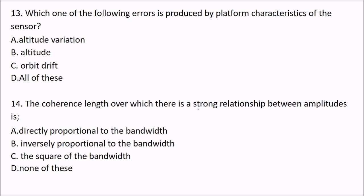Next question: which one of the following errors is produced by platform characteristics of the sensor? The options are altitude variation, altitude, and orbital drift. The answer is D — all of these — because platform characteristics can cause altitude variation and orbital drift.